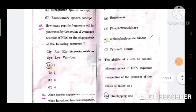Question number 68: How many peptide fragments will be generated by the action of cyanogen bromide on the oligopeptide of the following sequence? The correct answer is option A, 1.